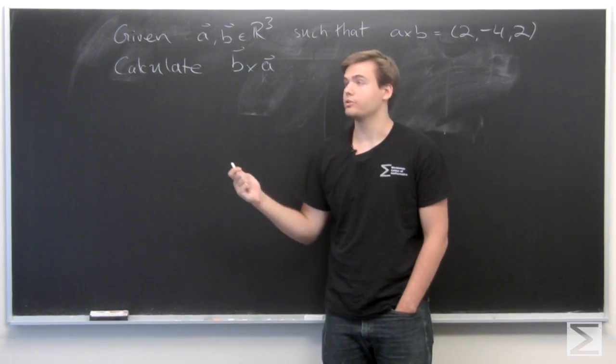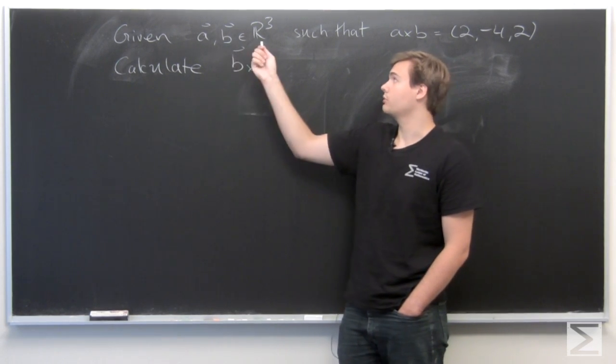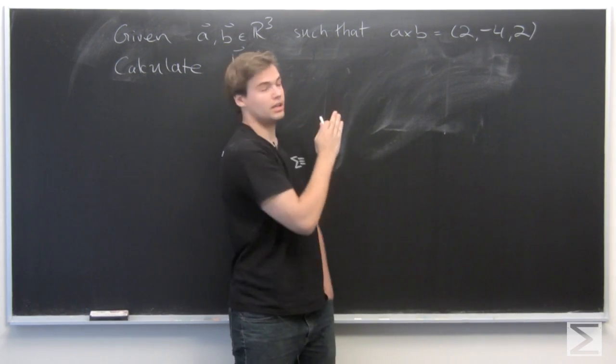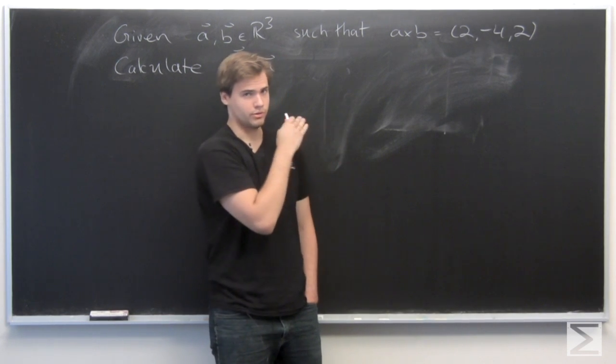Okay, so the problem we want to do here now is we're given two vectors A and B in R3, and we're given that the cross product of A cross B is 2, minus 4, 2.